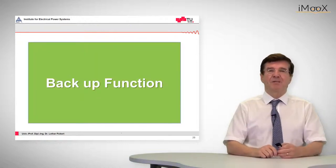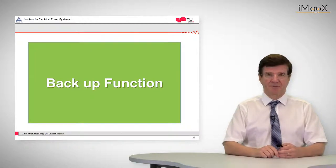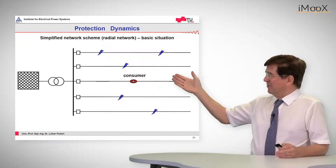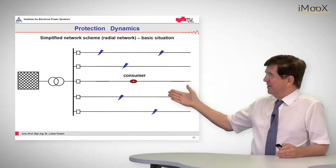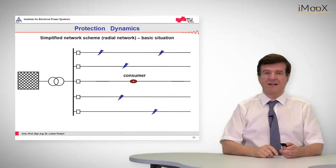So how about the backup function, which is also an imminent feature of overcurrent time grading. Let's see here a typical network which consists of a source, a feeding bus bar and several lines. And we have a sensitive consumer on the middle line.